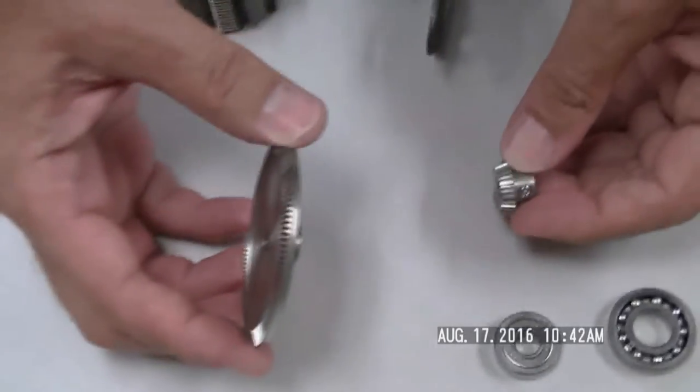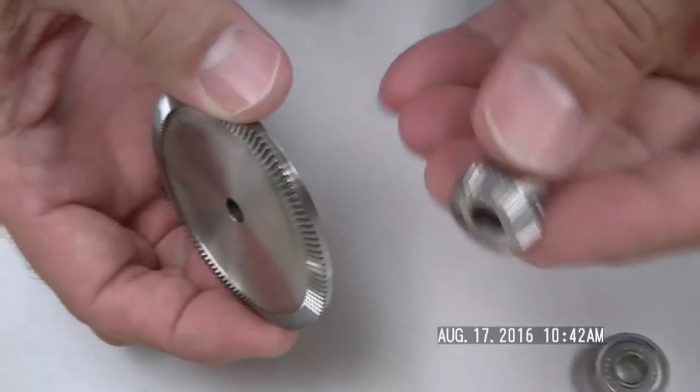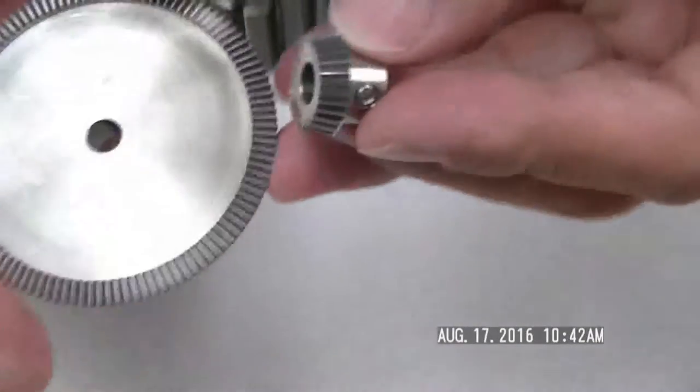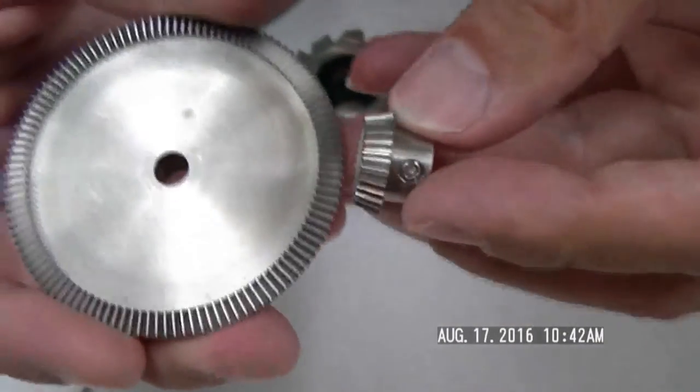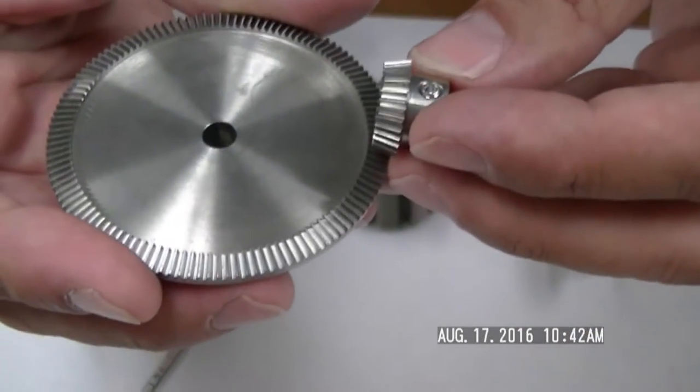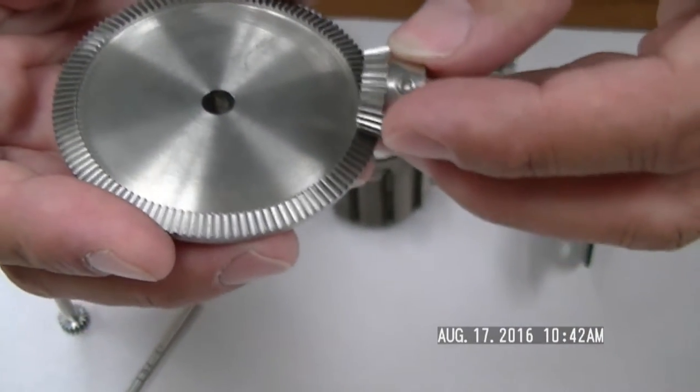This is our bevel gear setup. I don't know if you can see this. Basically, what we have are two gears where the teeth are angled. They're shaped like cones, if you want to be technical about it.